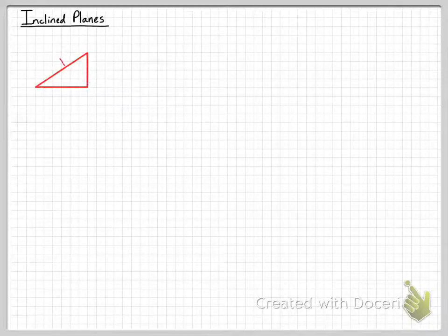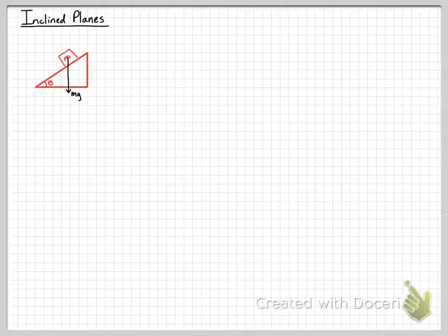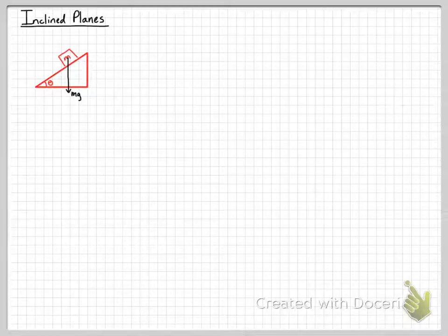This is our second forces video, and this is going to be over inclined planes. We're moving rather quickly through forces, but it's part of what we have to do to have review time toward the end of the year. We're going to look at what is happening to a mass M that is on an inclined plane with an angle theta, and we should know that gravity acts straight down toward the center of the Earth from every object's center of mass.